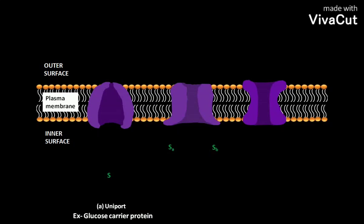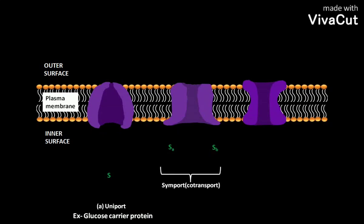The symporter couples the movement of one type of ion or molecule against its concentration gradient with the movement of one or more different ions down its concentration gradient. This type of transport is called symport because SA and SB are moved in the same direction.